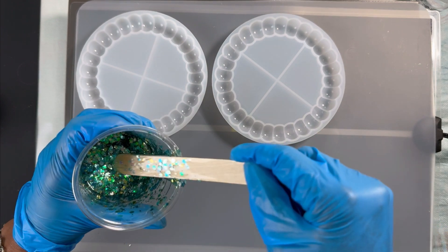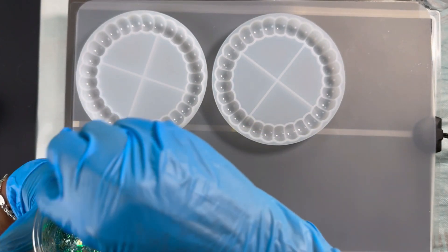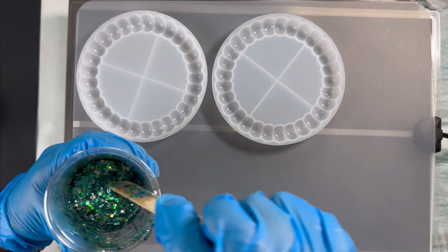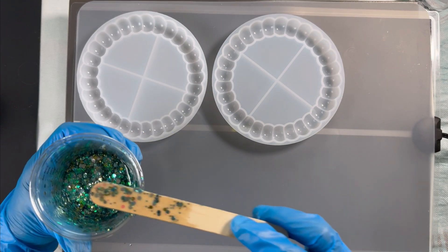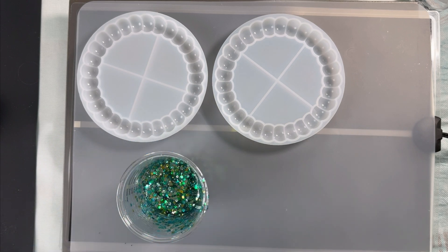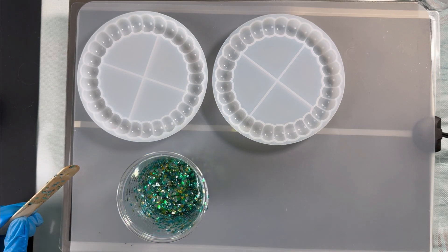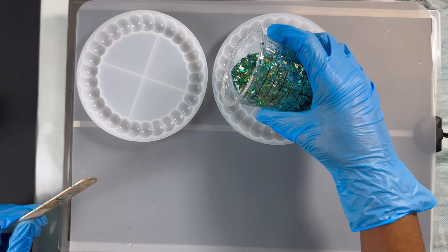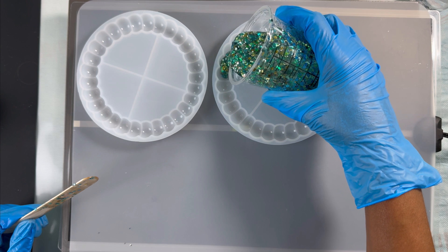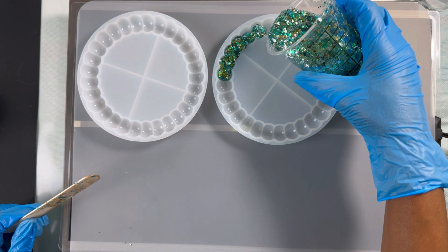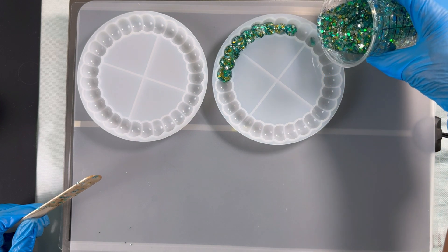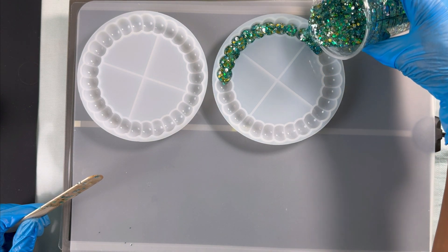I didn't run my resin through the debubbler because of all this glitter I'm going to put in. So I measured, it takes about an ounce and a half to fill these molds. I think those are going to turn out really nice. I don't want to get it in the center. I just want to do it on the edge.